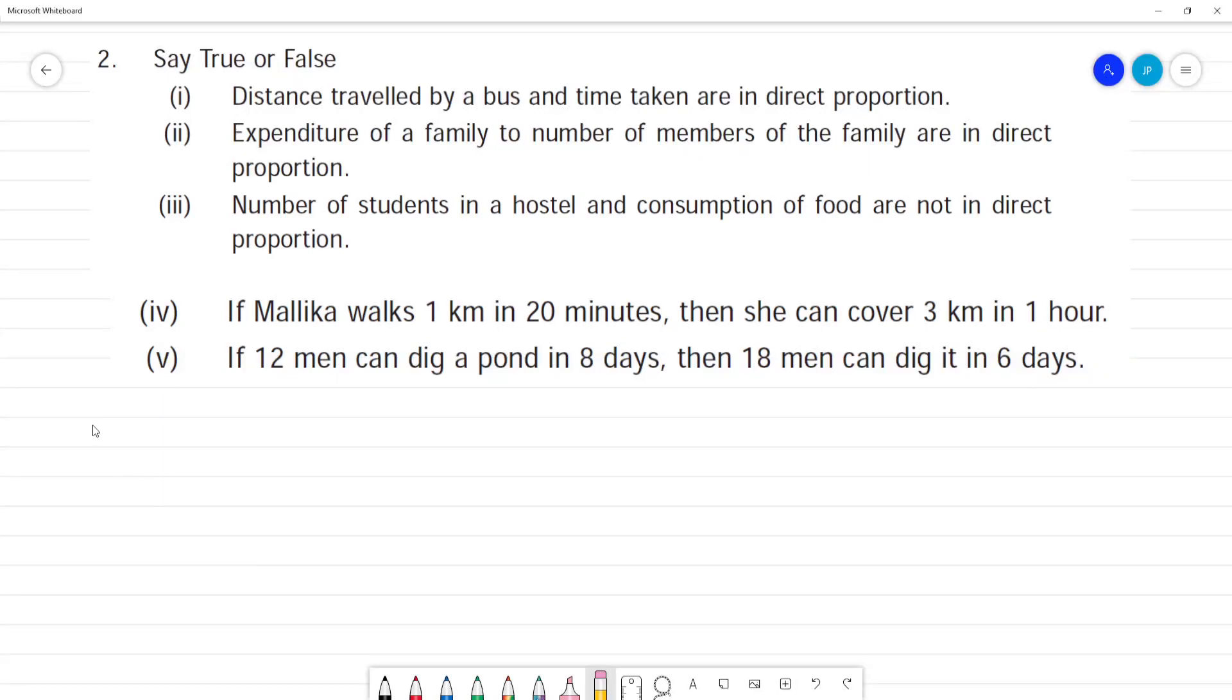Say true or false. First one: distance travelled by a bus and time taken are in direct proportion.